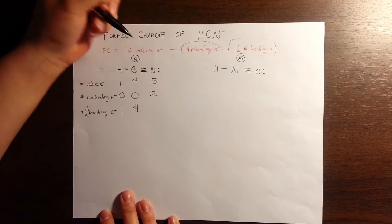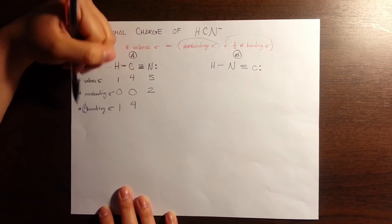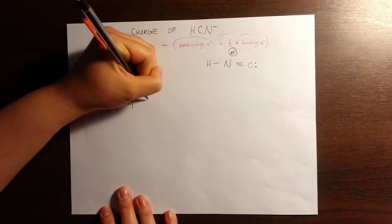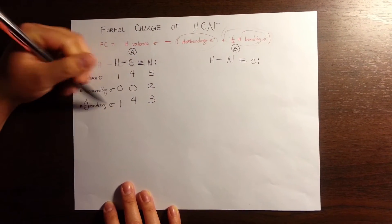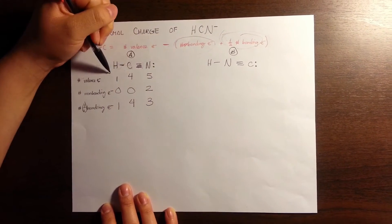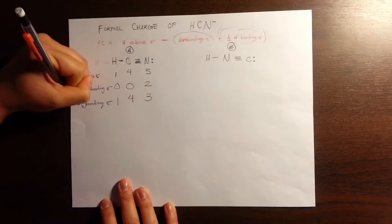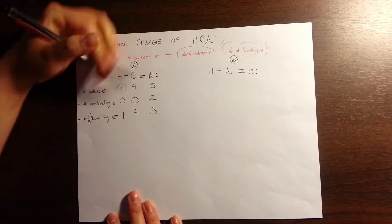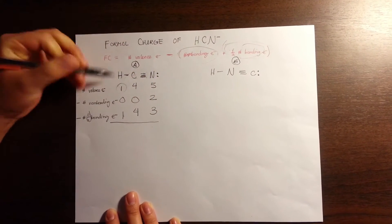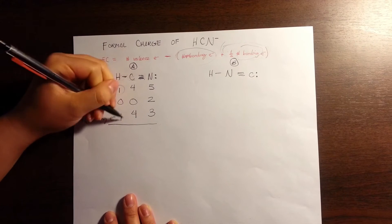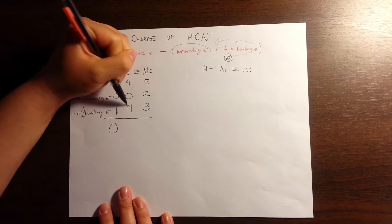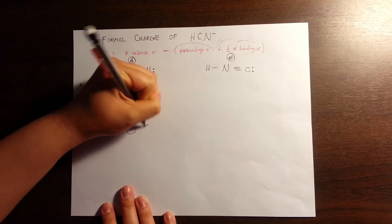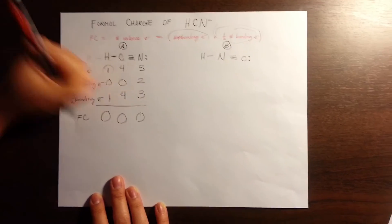Looking at this nitrogen, for this value, it has three bonding electrons. Now we subtract these numbers from the number of valence electrons. So one minus one is zero, four minus four is zero, and five minus two minus three is also zero. So here's our formal charge.